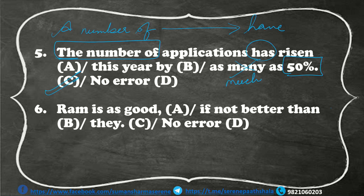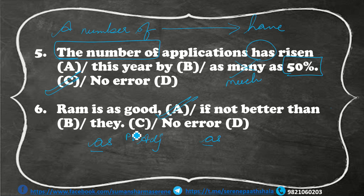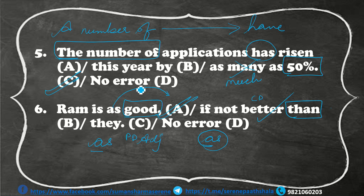The next question: 'Ram is as good, if not better than they.' The error is in the A part. Students, remember — comparison ke liye aap 'as adjective as' use karte hain. Yahan positive degree adjective use hota hai. Toh 'as good as' — lekin yahan doosra 'as' missing tha. Ram is as good as, if not better than they. 'If not better than' ke pehle comparative degree use karte hain — jo yahan hai. Lekin 'as good as' wala structure poora nahi hua. So the error is in the A part.